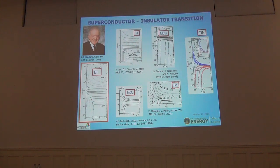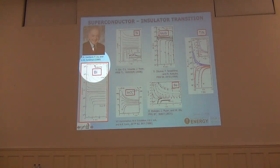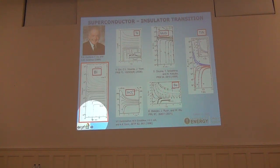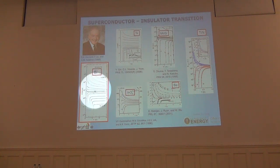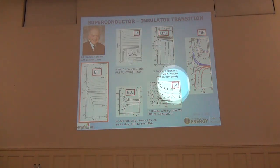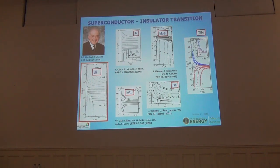This was a fundamental discovery, first of all because it was unexpected at the time — it was believed that in two dimensions there cannot be any phase transitions. Goldman's group first found that if you have thin films of bismuth in which you can regulate disorder by changing the thickness of the film, you can see a transition from superconducting to insulating behavior. This led to a whole panoply of superconductor-insulator transitions in different materials.